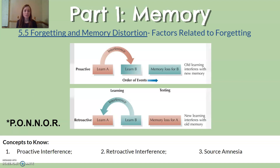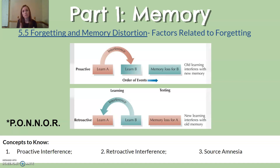Source amnesia is another situation related to forgetting. It happens when people misattribute information to an inaccurate source — not intentionally, but because they've forgotten where the information came from. For example, someone might say they read something on social media when really a friend told them. They simply misattributed the source.